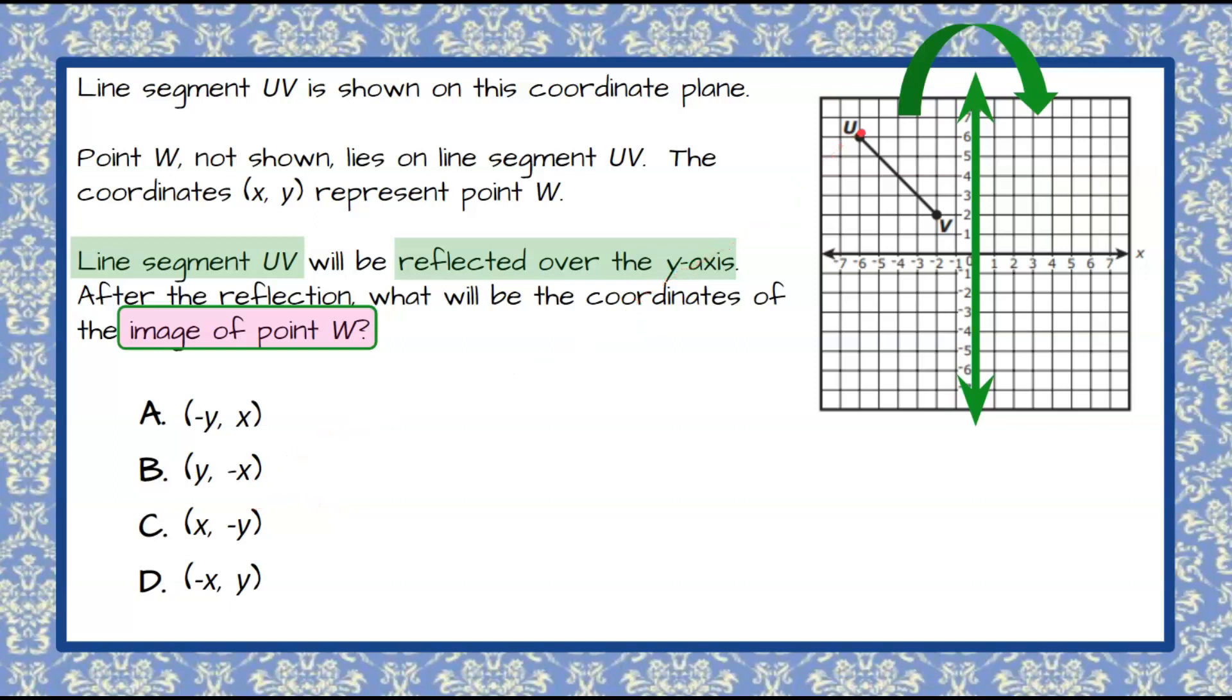So when I reflect, I'm going to U prime. My image is going to be the same distance from the y-axis on the other side. So I'm going to reflect it over. So here it is six units to the left of the y-axis. The image or U prime is going to be reflected six units to the right. So that's U prime.